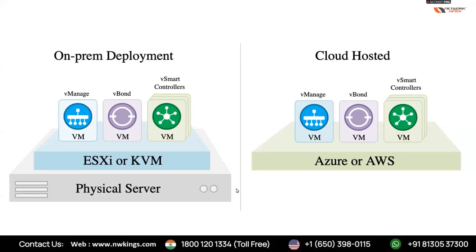We can have multiple physical servers for redundancy. For large setups requiring multiple vSmarts and vManages, we can deploy across three physical servers. In on-prem deployment, we plan and configure everything ourselves — IP addresses, design, everything. Cisco does nothing in this case.